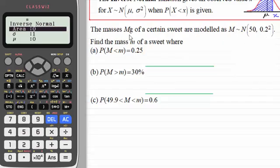We've got the masses, M grams of a certain sweet, are modelled as a normal distribution. M is distributed normally with a mean of 50 and a variance of 0.2 squared. In other words, 0.04, but I've kept it as the standard deviation 0.2. So find the mass m of a sweet where we have the probability that the mass m being less than this observed value, little m, is equal to 0.25.